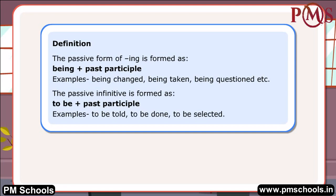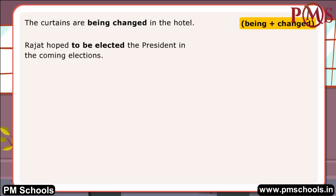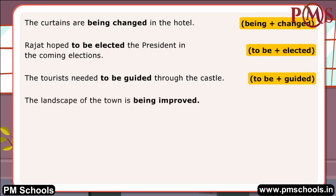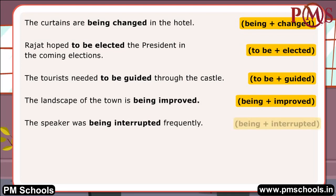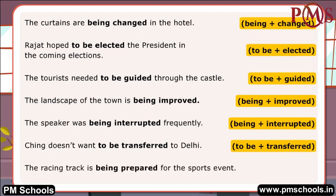Let us look at a few sentences using the passive forms of verb plus -ing and to infinitive. The curtains are being changed in the hotel — being plus changed. Rajat hoped to be elected president in the coming elections — to be plus elected. The tourists needed to be guided through the castle — to be plus guided. The landscape of the town is being improved — being plus improved. The speaker was being interrupted frequently — being plus interrupted. Ching doesn't want to be transferred to Delhi — to be plus transferred. The racing track is being prepared for the sports event — being plus prepared.